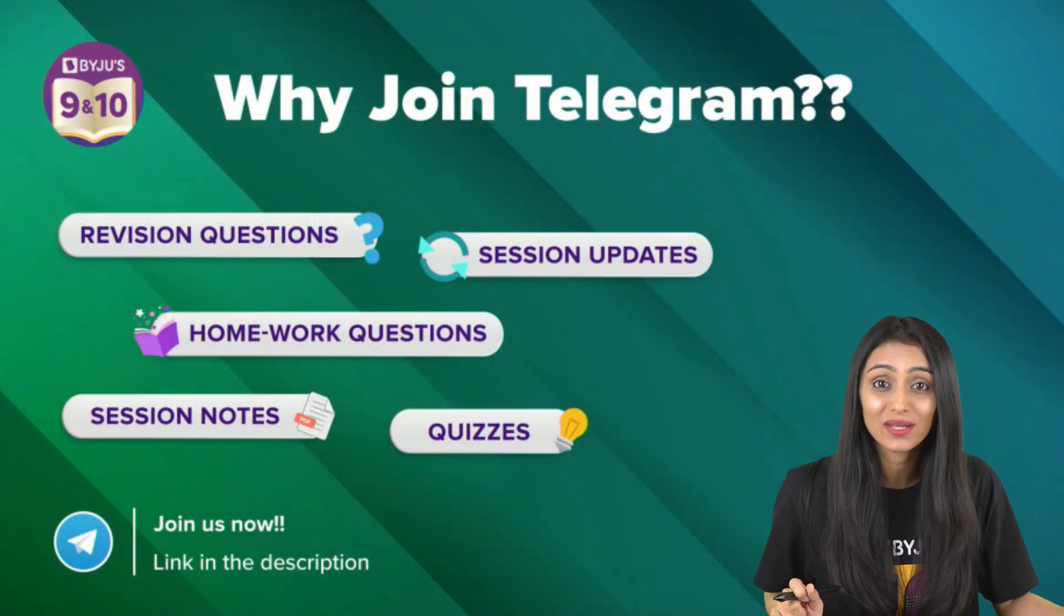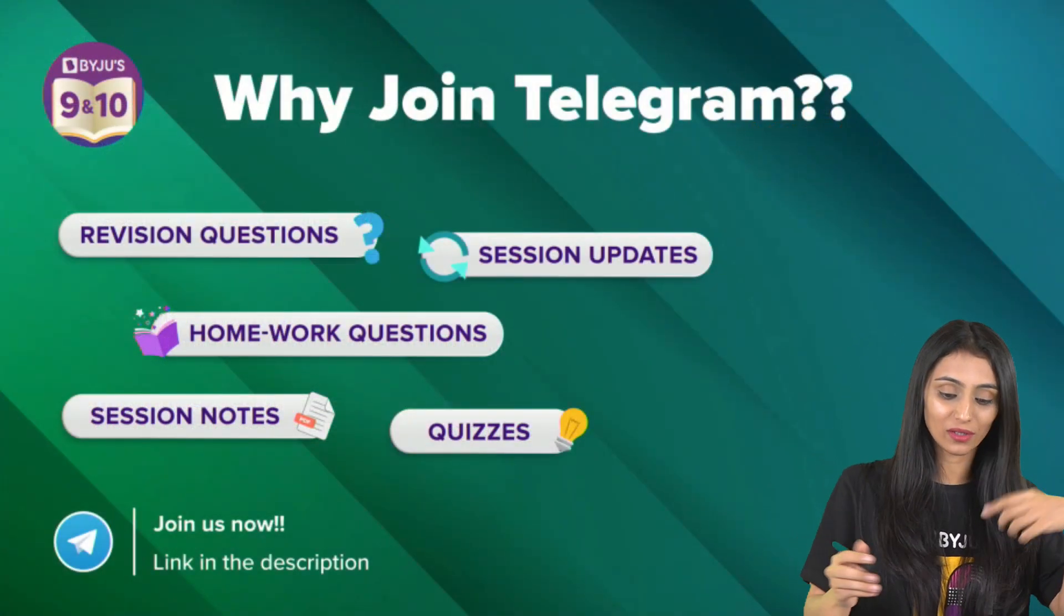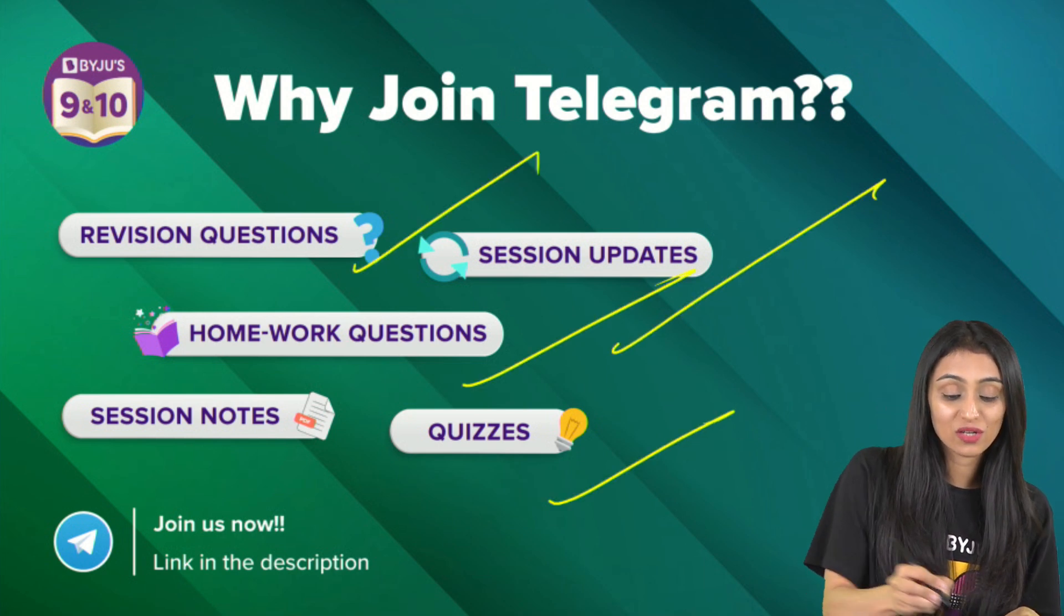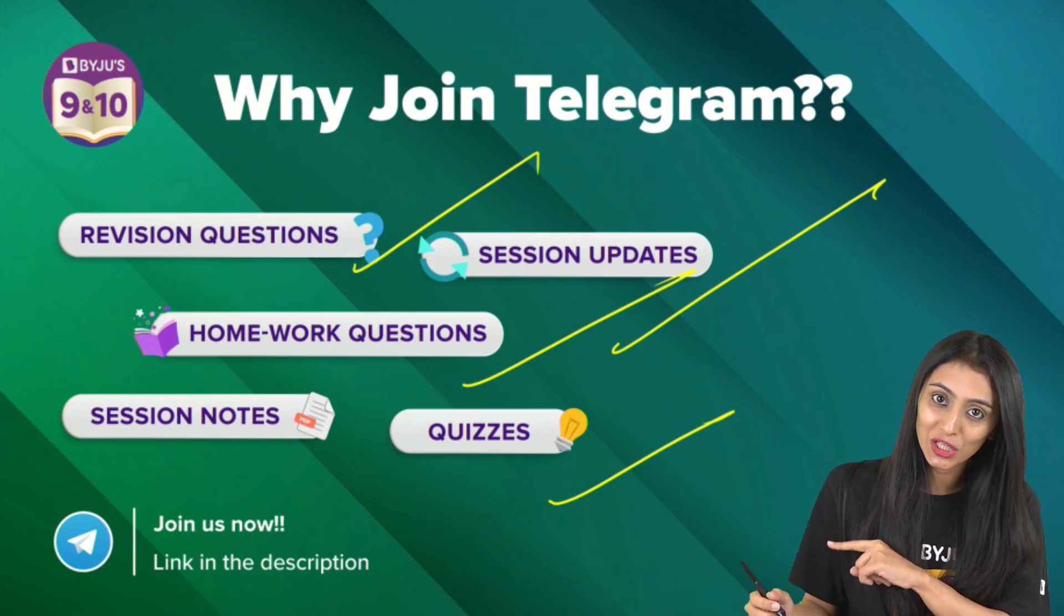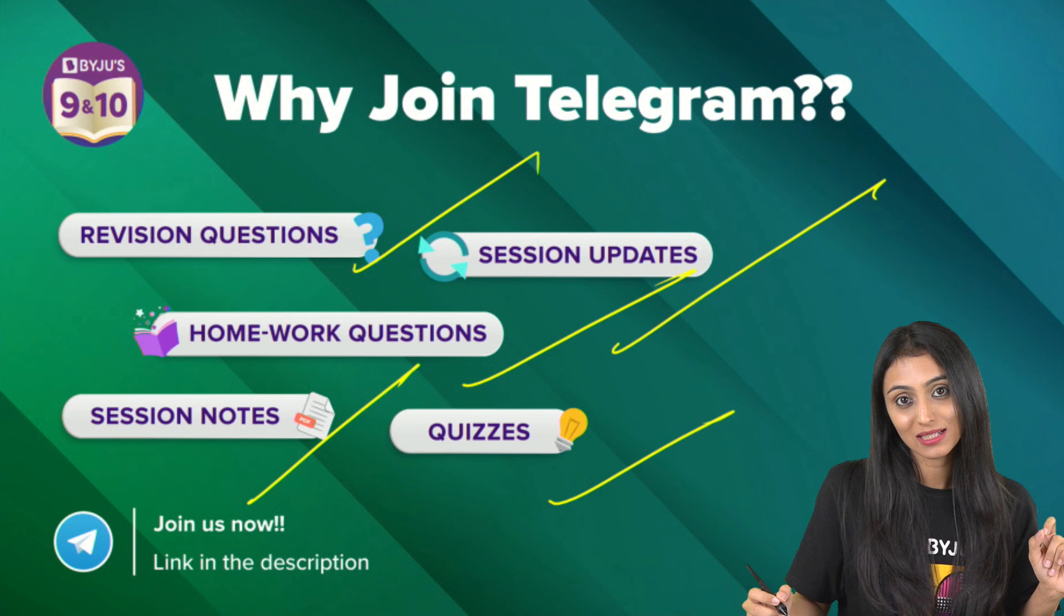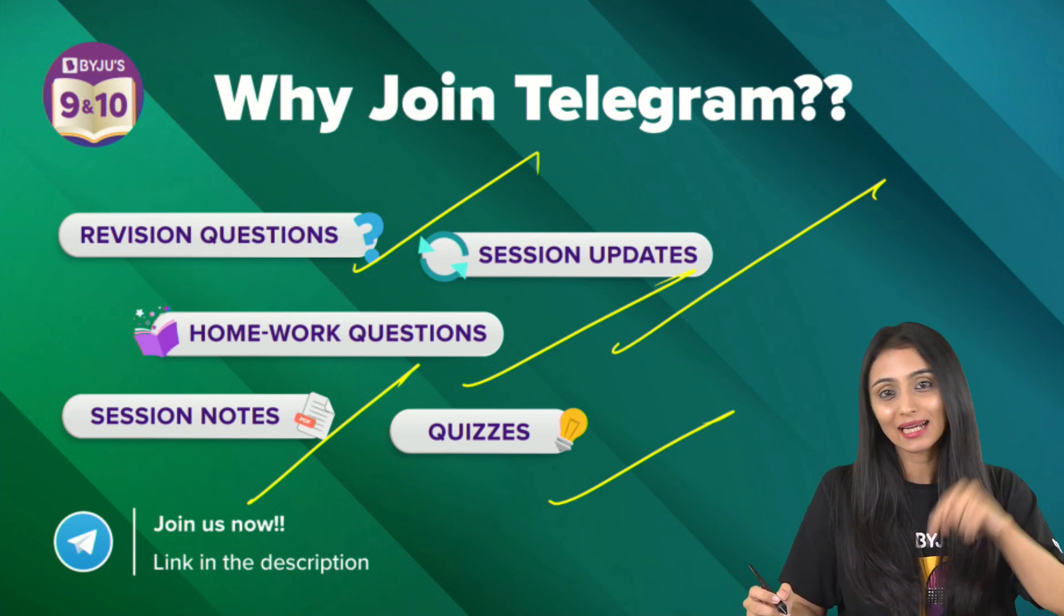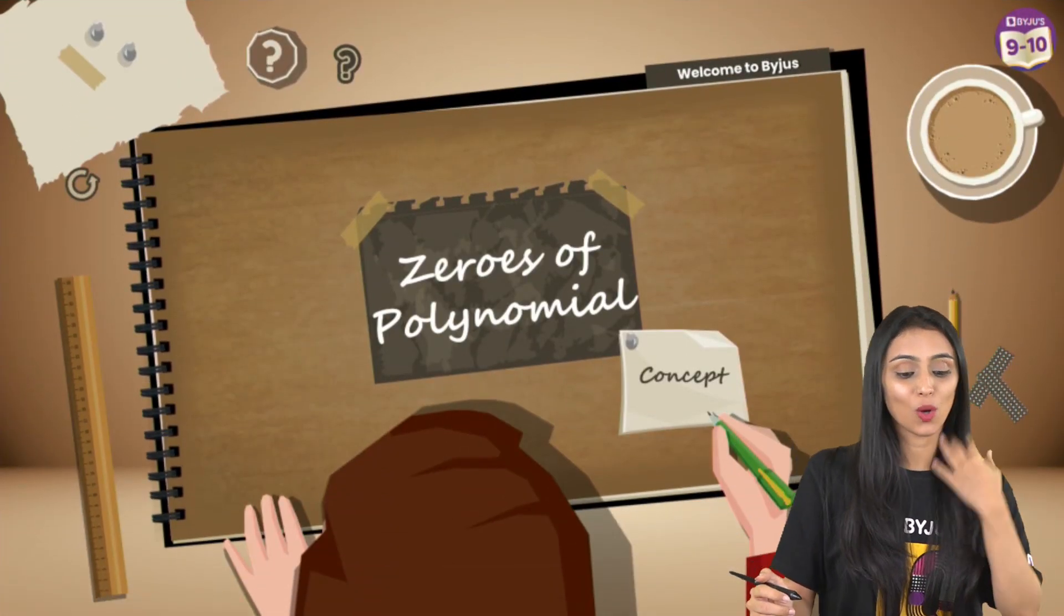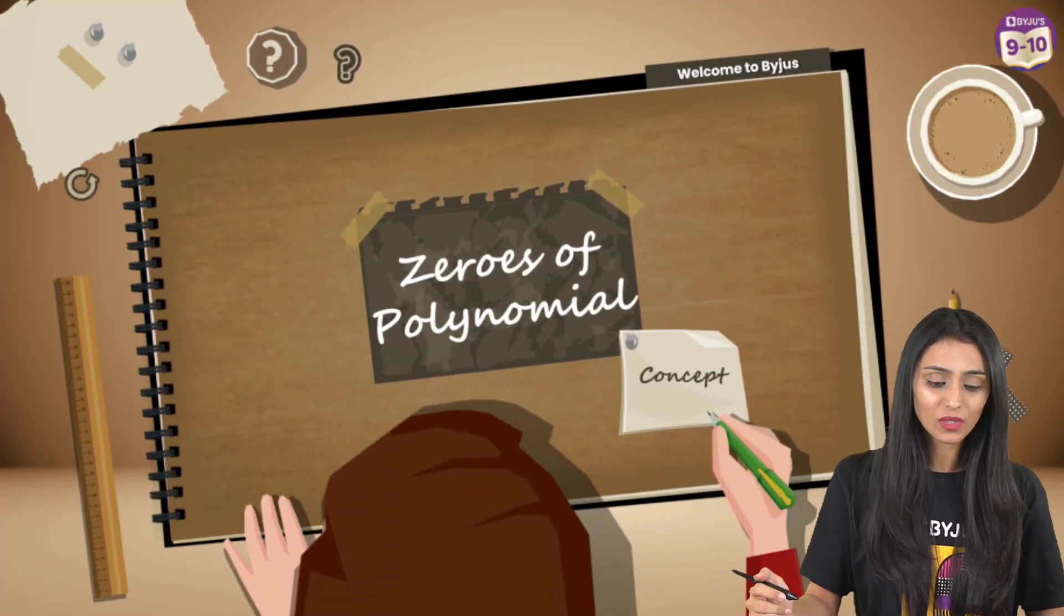I hope that everybody has joined the telegram channel. So many benefits we have there - session updates, quizzes, homework questions, revision questions. Whatever sessions we are doing here, their session PDFs would be shared via the telegram channel. The link for that as well is given in the description. But for now, let's get started with our topic: zeros of the polynomial.